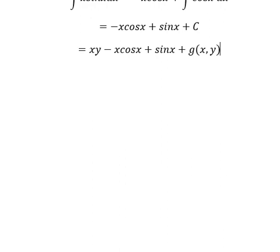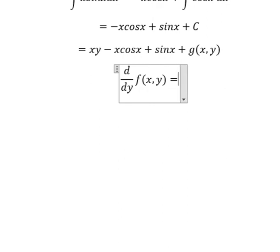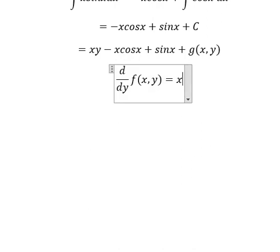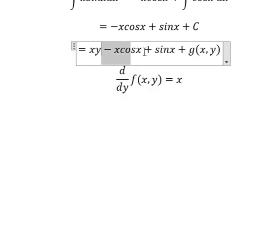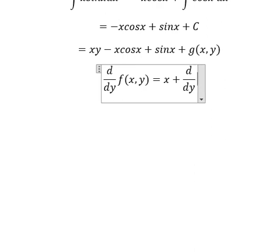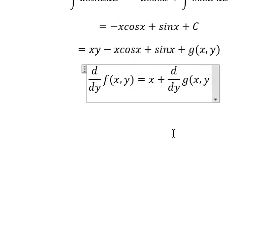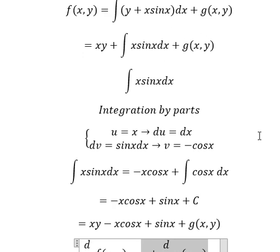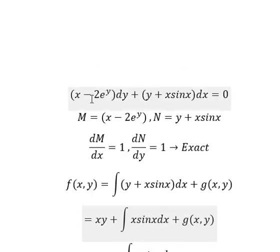Next, we need to do the first derivative of f with respect to y. So we just have only this one, and you get number 1, so we have x. This one gives number 0. And we know that this one equals to this one.